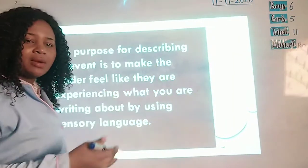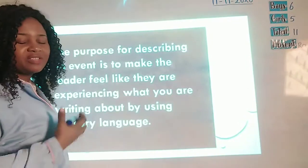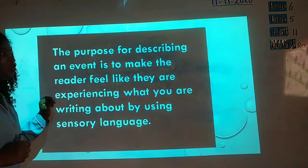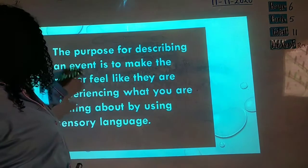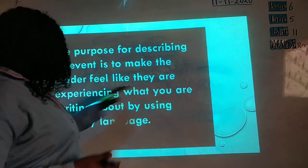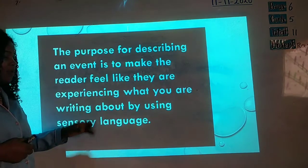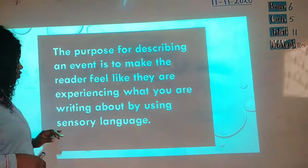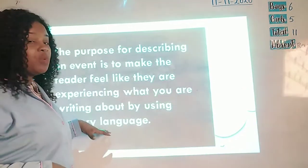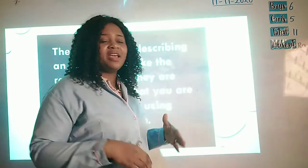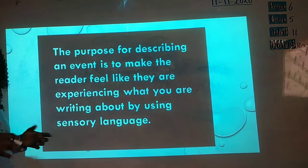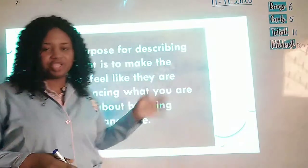We continue with a little more explanation just to make it clear before we start the writing. Here, we're going to talk about the purpose, the reason. Why should we do descriptive writing? The purpose is for describing an event. The purpose for describing an event is to make the reader feel like they are experiencing what you are writing about by using sensory language. So what are the sensory language? The sight, the hearing. It's all involved in the sensory language. All these are part of the adjectives that will describe your descriptive essay.